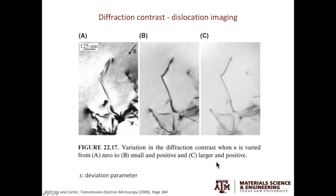The last slide of today's video: dislocation imaging is also from diffraction contrast. If you don't understand what I'm going to say next, do not worry, because we'll cover this again in later videos in more detail. Interestingly, the best diffraction condition to image dislocations is actually not the two-beam condition. What you want to do is tilt your crystal slightly away from the two-beam condition to introduce a term called the deviation parameter. As the deviation parameter gets larger and larger, the image becomes clearer and clearer.